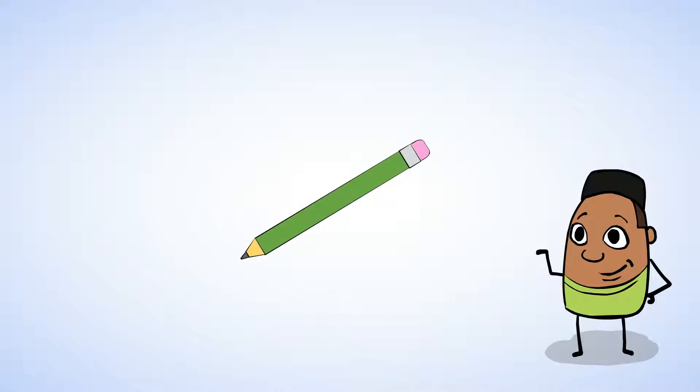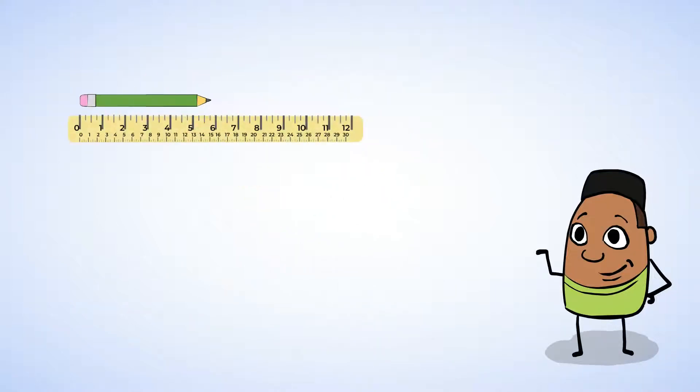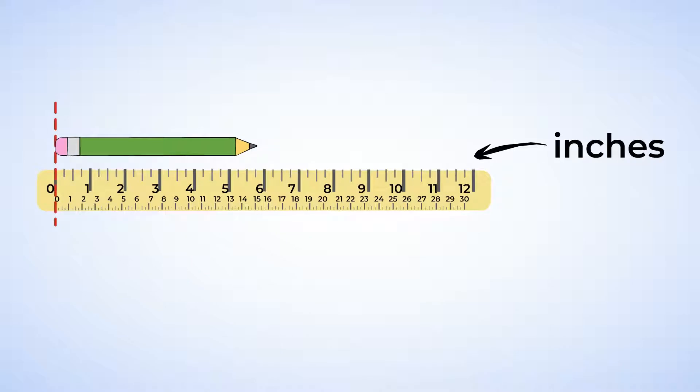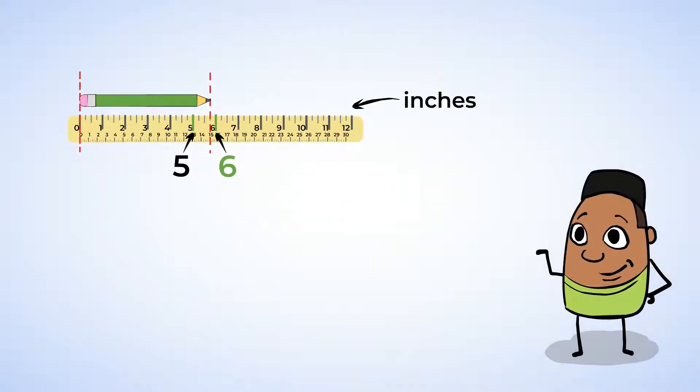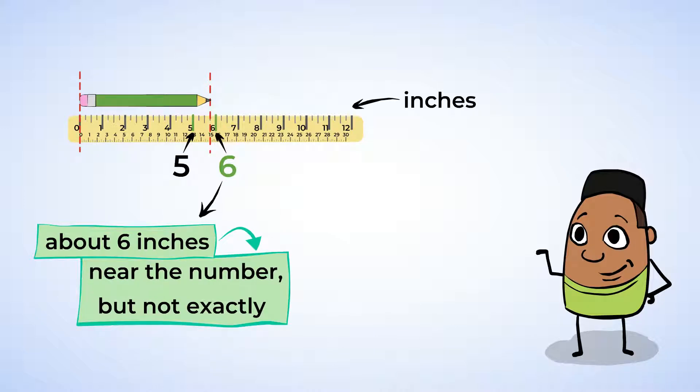Now, let's start by measuring this pencil with a ruler. You can see that one side of the ruler has inches on it, and the other side has centimeters. Let's start with the inches. The pencil is aligned on the left-hand side, so that's good. Now, let's look at the other side. This side of the pencil is between 5 and 6 inches, but it looks to be closer to 6 than 5. So, we can say that it is about 6 inches. And when we say a measurement is about, it means that it is near the number, but not exactly.